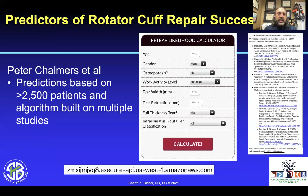Peter Chalmers and his group made an app to help predict rotator cuff healing outcomes. They looked at these different articles utilizing over 2,500 patients. This algorithm takes various variables, and if you enter them into this calculator, it gives you a percentage of failure — almost like a crystal ball to see if repairs will heal ahead of time.